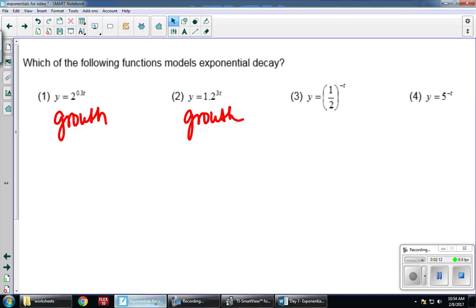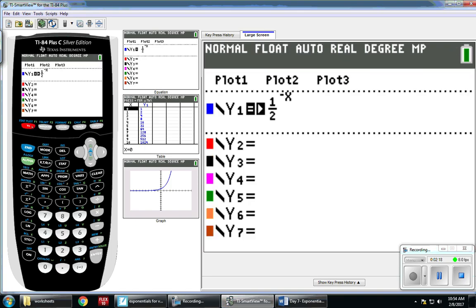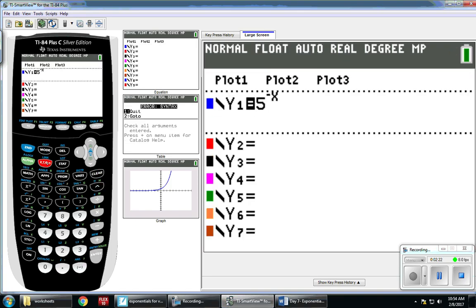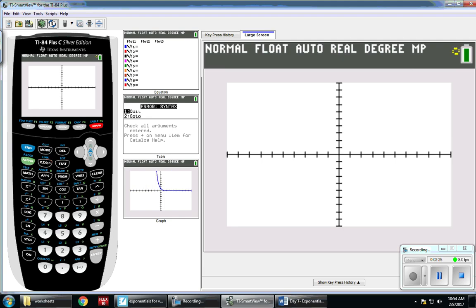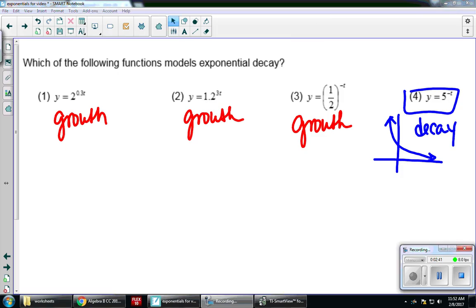So process of elimination is going to tell me it's this last question, but I just want to check it out to be sure. Go back to my calculator, 5 to the negative x power. Take a look at my graph and it is decreasing because it's going down, so it's decay. Here's a sketch of what it looks like, so this is decay.